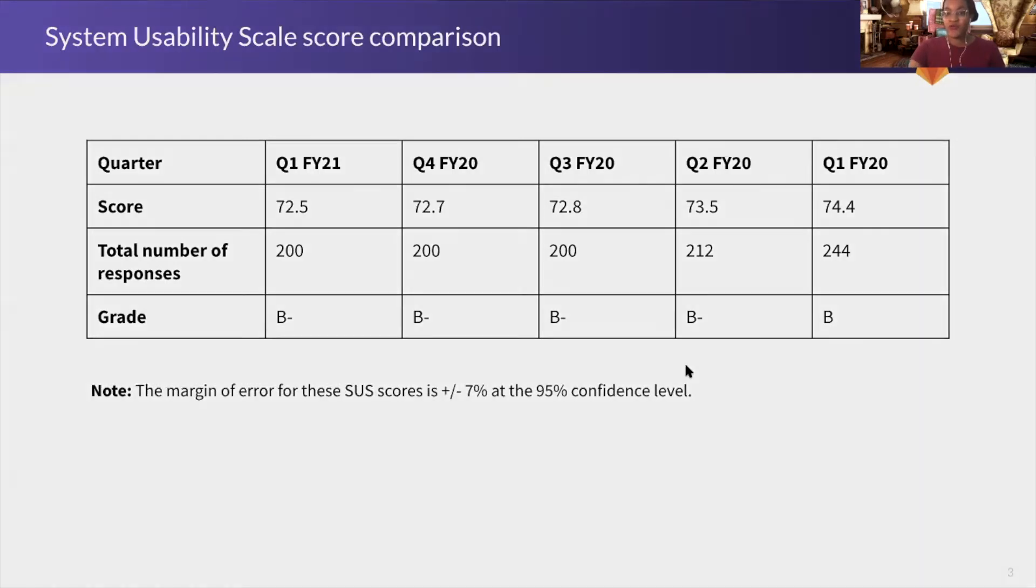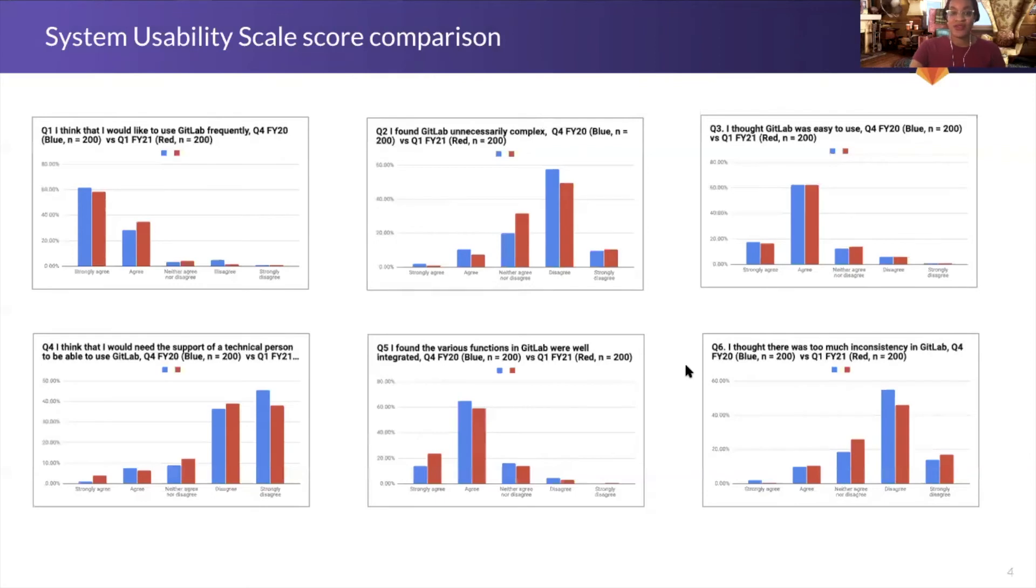Here we have the charts that show the breakdown of responses to the Likert statements. I just wanted to give you an overview of how the data is distributed. The scale goes from strongly agree to strongly disagree, and as you can see,